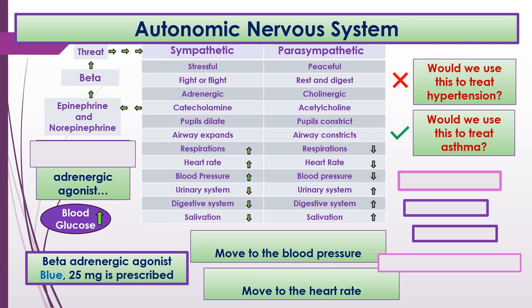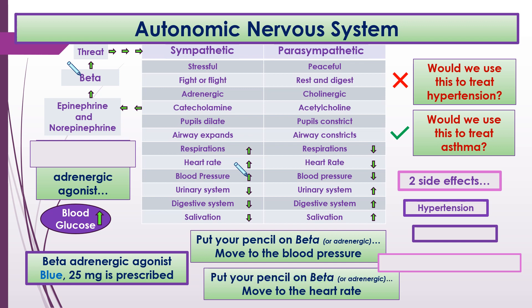We've determined we'd use this agonist to treat asthma but not hypertension. For side effects: put your pencil on beta or adrenergic and move to blood pressure — it goes up, so hypertension is a side effect. Move to heart rate — that goes up as well, so tachycardia is another side effect. Two nursing interventions would be to monitor heart rate and monitor blood pressure. Note that albuterol and terbutaline are actually classified as adrenergic agonists.